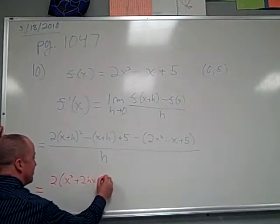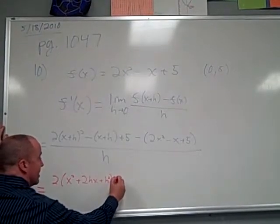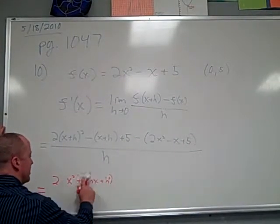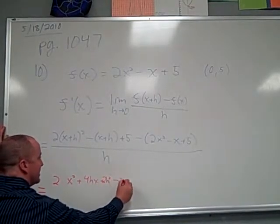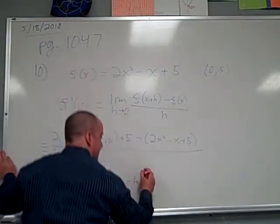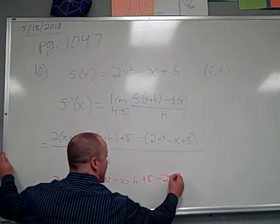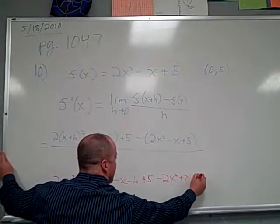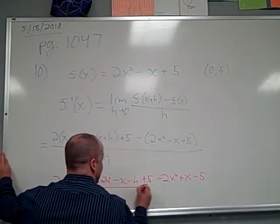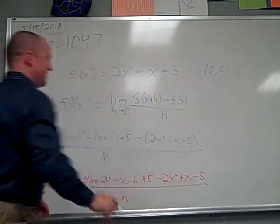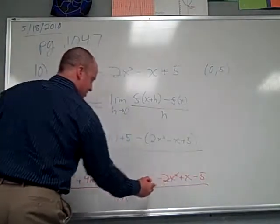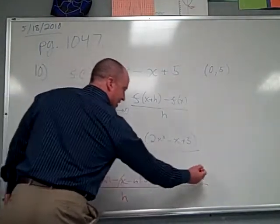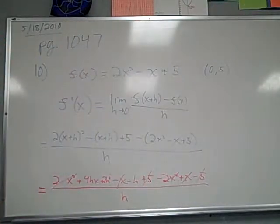2 times x plus h squared minus x plus h plus 5 minus 2x squared minus x plus 5 all over h. This one won't last to the end of this problem. Or will it? So you're just plugging x plus h into everything once, and then subtracting the original function. Just what we did with the difference quotient. Now let's see what should start to happen. 2x squared minus 2x squared.